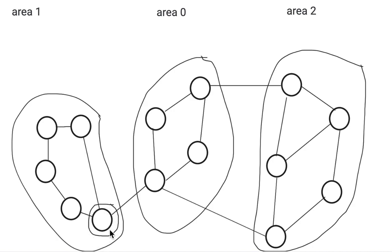So any router like this, for example, which lies on the border of two or more different areas is called an area border router. For example, this one. This is connected to both area 1 and area 0.